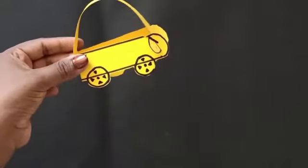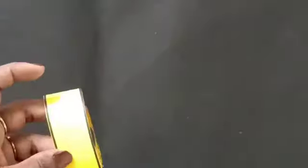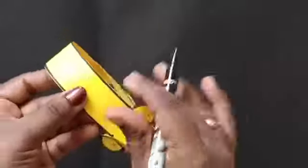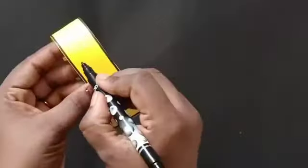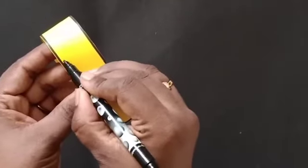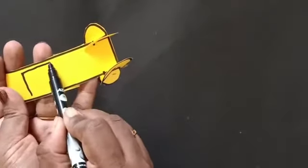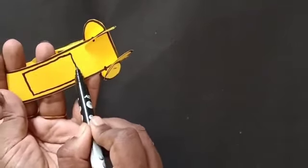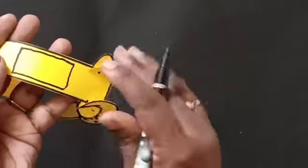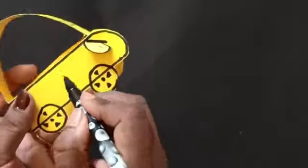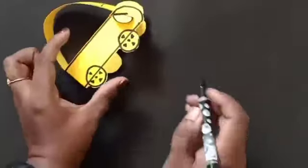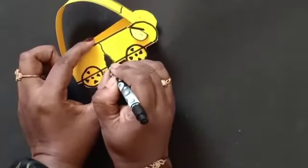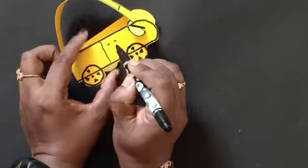So see, doesn't it look like a car? Now we will make its glass in the front with the help of sketch pen. And we will make the door by making a standing line here and the knobs.